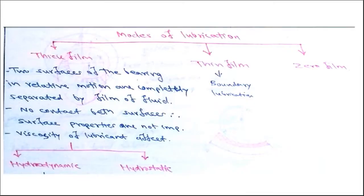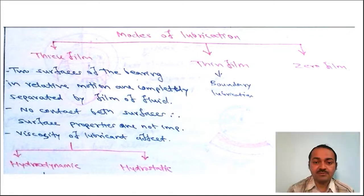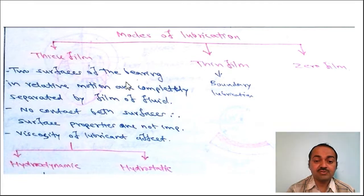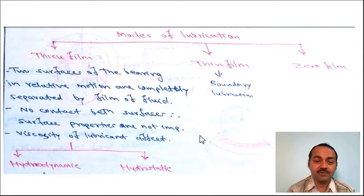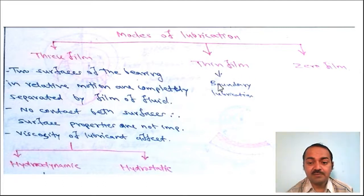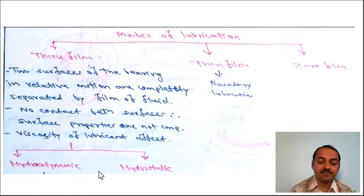Now we discuss modes of lubrication. There are three modes: thick film lubrication, thin film lubrication, and zero film lubrication. In thick film lubrication, the two bearing surfaces in relative motion are completely separated by a fluid film with no surface contact — so surface properties are not important, but lubricant viscosity is the important parameter. The oil film thickness is 8 to 20 microns, with coefficient of friction 0.001 to 0.02. Thin film (boundary) lubrication has coefficient of friction 0.004 to 0.10.